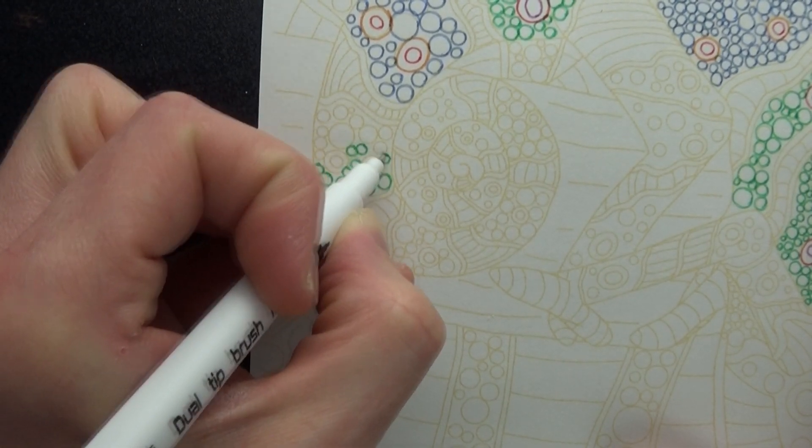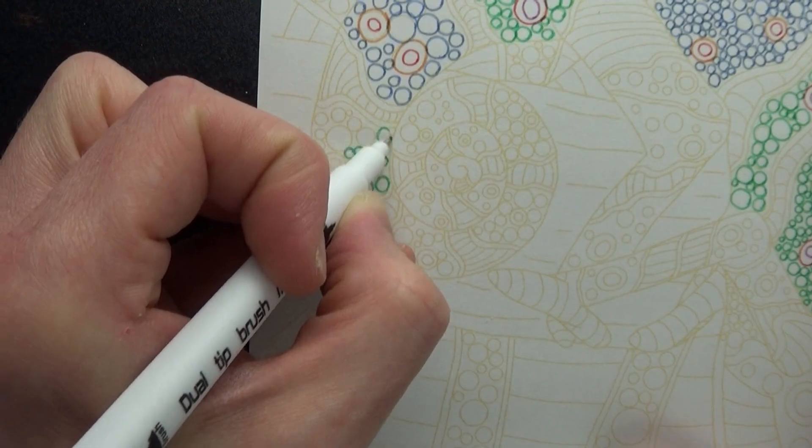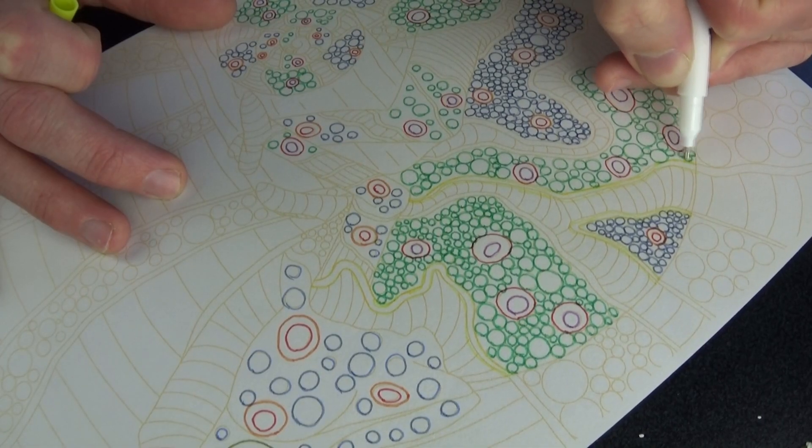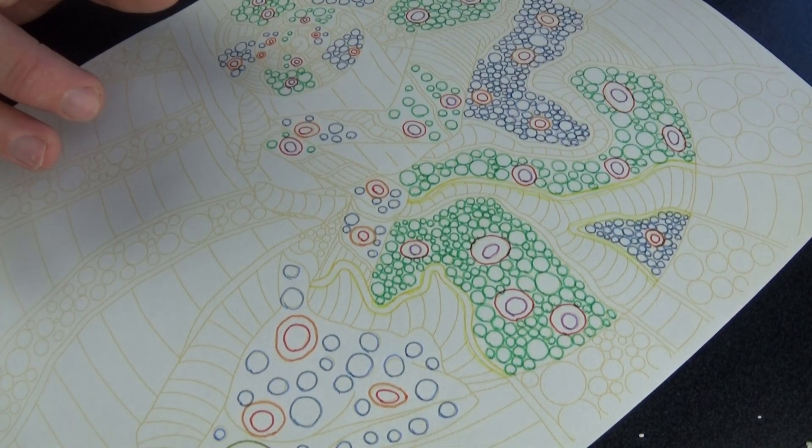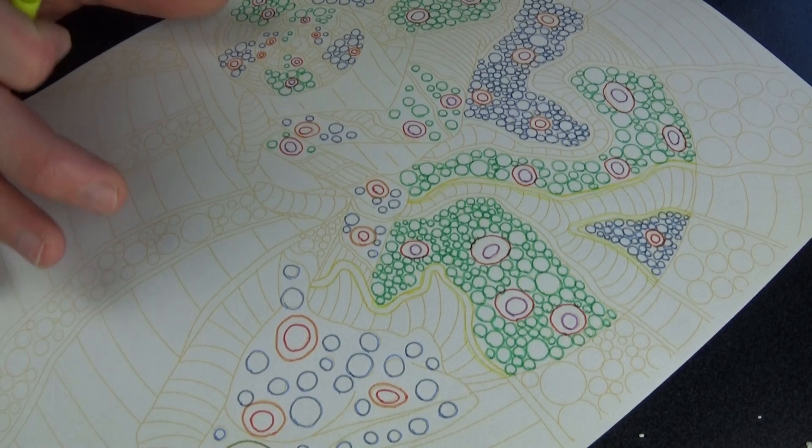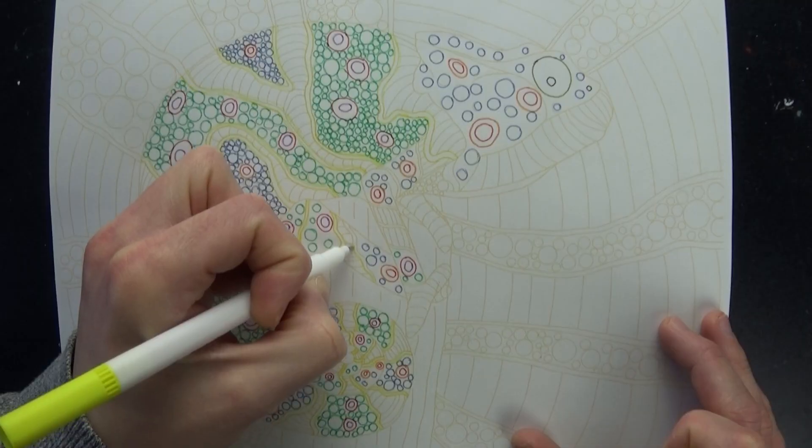Hopefully it comes across in the video just how satisfying this process can be. Now there's no rules about what color each line or section needs to be. It's completely up to you. Make it colorful, make it as simple as you like.